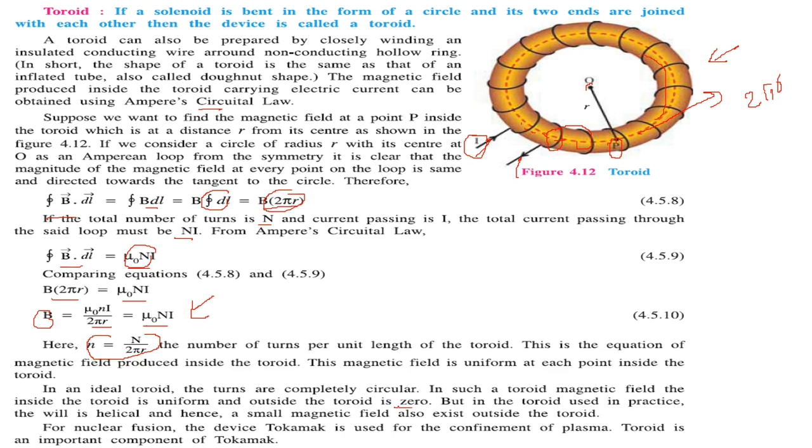But in the toroid used in practice, it will be helical, so a small magnetic field will exist outside also. For nuclear fusion, the device tokamak is used for the confinement of plasma. The toroid is an important component of this tokamak.